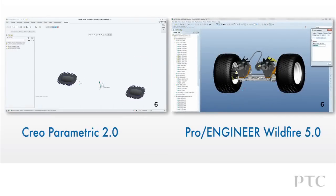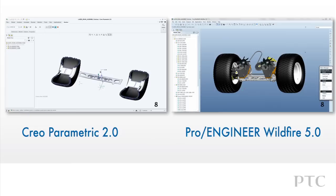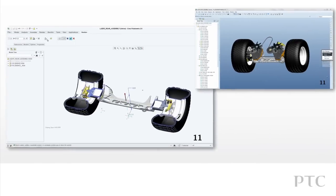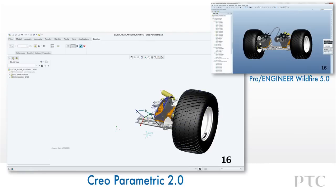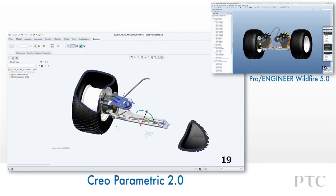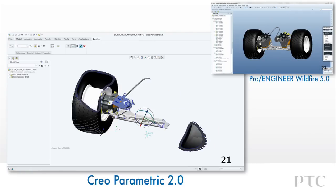Creo Parametric introduces many enhancements to make the process of creating 3D cross sections faster than Pro Engineer Wildfire. We can create cross sections by easily selecting directions based on the default coordinate system, or we can select a planar surface to reference. As we drag the arrow, the assembly dynamically cuts away to reveal the section, allowing us to quickly position the section in the right location.